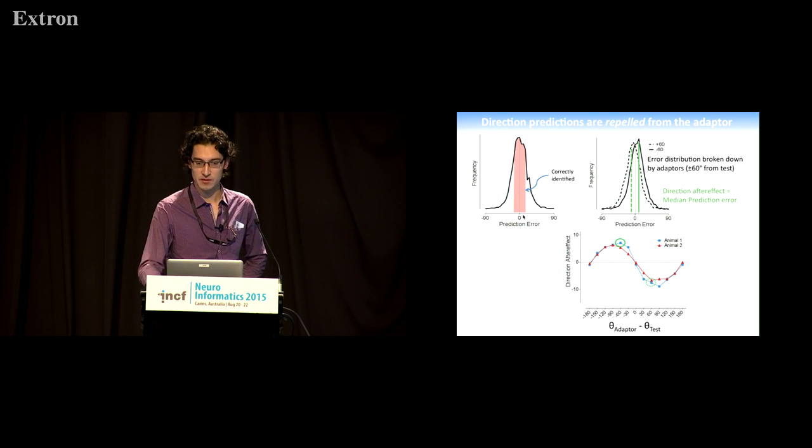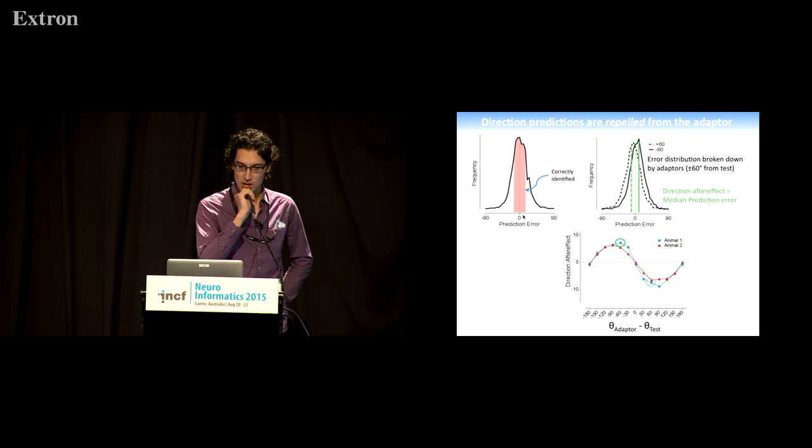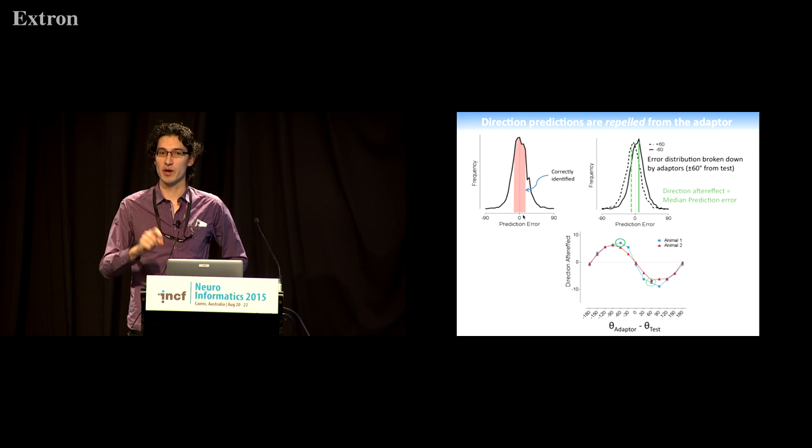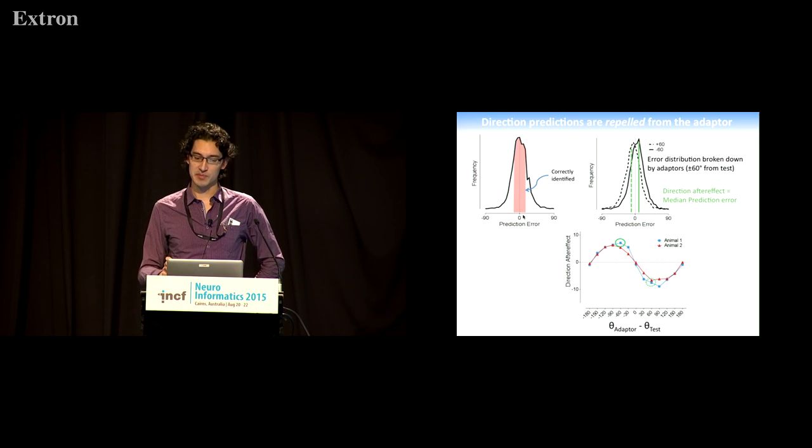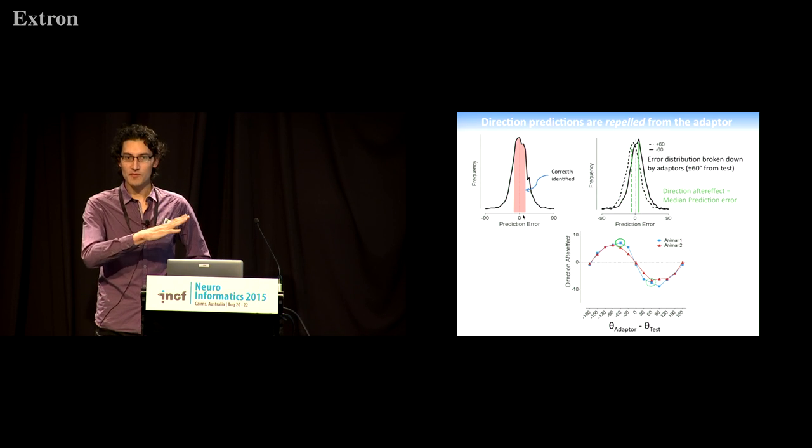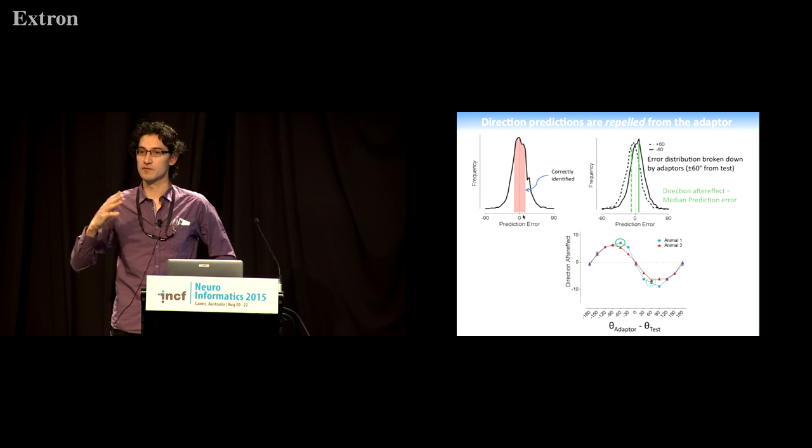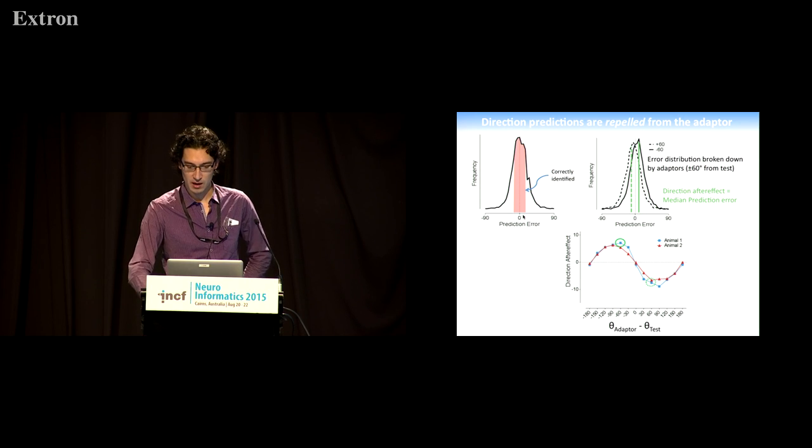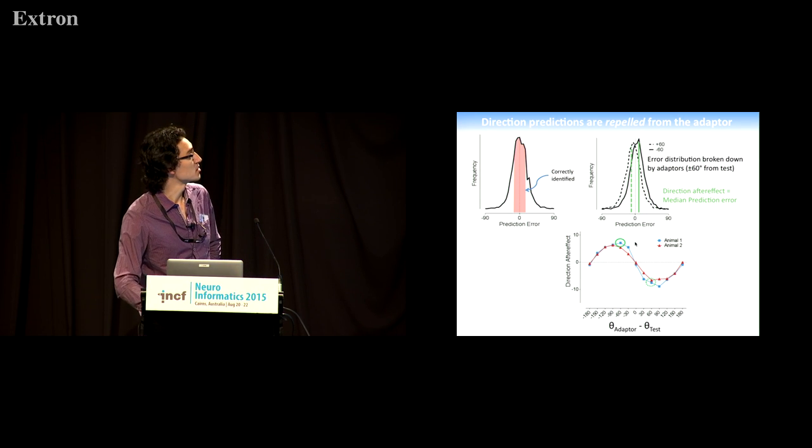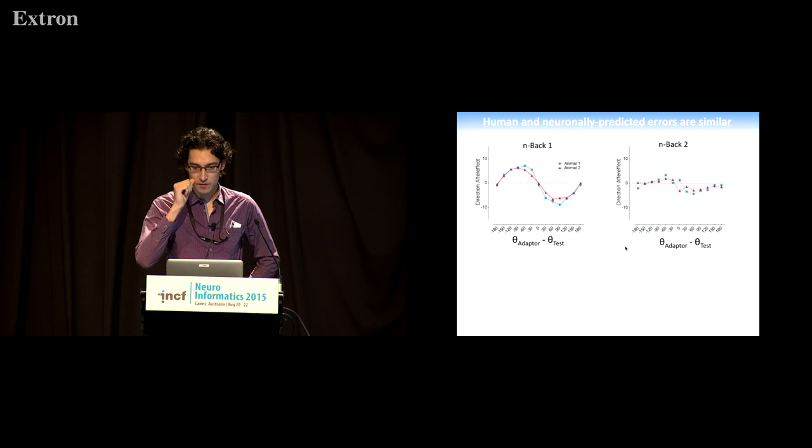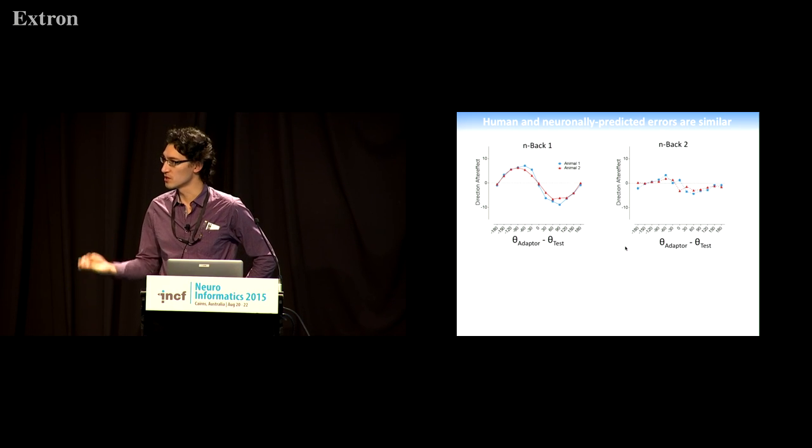If we take those medians—the green circles correspond to the plot at the top—then we can see that we get different sized direction aftereffects depending on how far apart the adaptation direction and the test direction are. How can we relate this back to human perception? If you think about that example that I showed you at the start, you saw a repulsive perceptual direction aftereffect, and that corresponds exactly to the types of shifts that we're seeing here from the decoding. So this decoding matches what we see in humans.